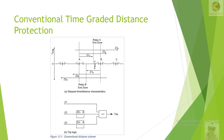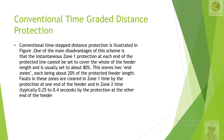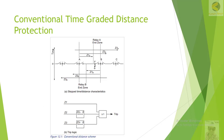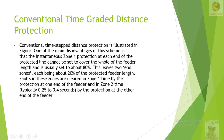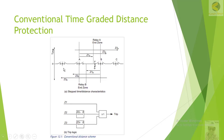The solution to this problem lies in permissive schemes. There are permissive schemes that provide solutions: the permissive overreach transfer trip scheme, the permissive underreach transfer trip scheme, and the blocking scheme. These schemes reduce the dead time and reduce the fault feeding time, which we will understand in further discussions.